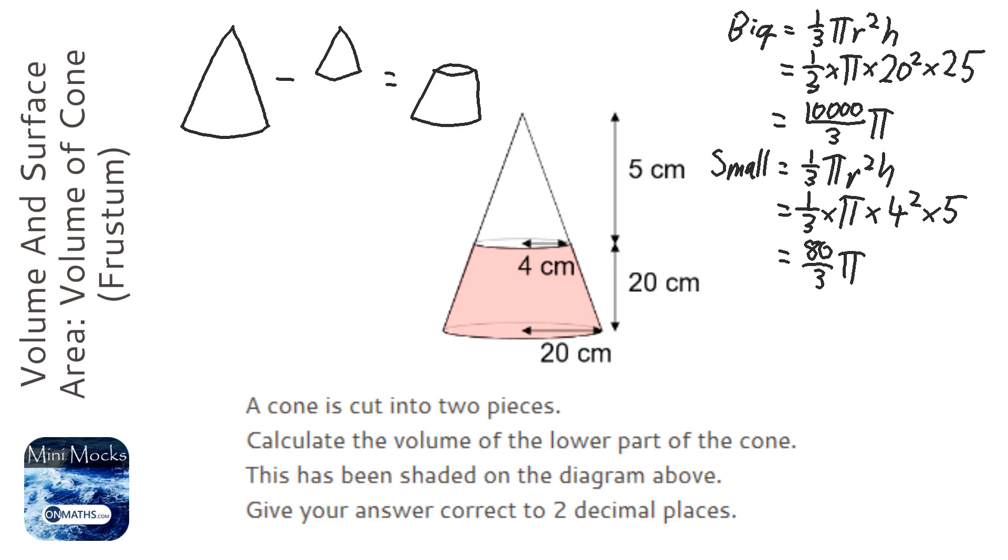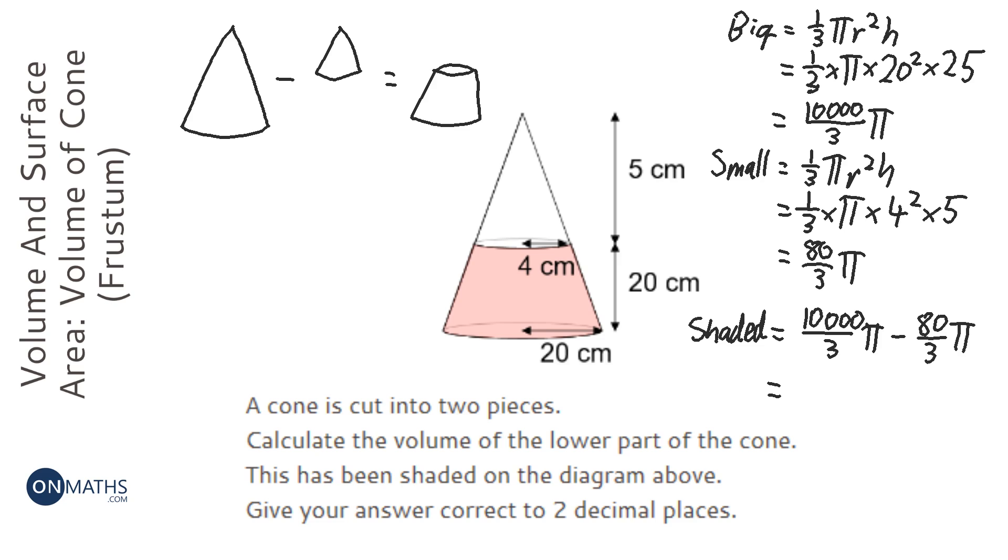And the volume of the shape, it is a shaded volume. It is going to be the big one take away the small one. So I am going to type that in, so 10,000 π over 3, take away 80 π over 3. And that gives me the answer of 10,388.19971.